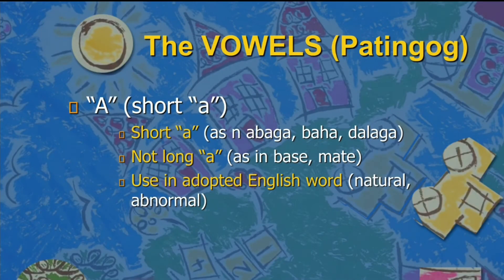The letter A, or the vowel — patingog in Cebuano, patinig in Tagalog. The vowel A should be a short A, as in abaga, baha, dalaga. It is not a long A as in base or mate. A short A is also used in adapted English words like natural and abnormal. Those are English words, but when we read and say them, they sound like Cebuano words.